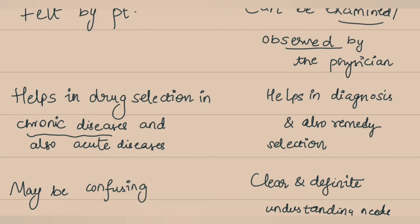These symptoms constitutionally help in understanding the patient's constitution and in determining the exact remedy, specifically in chronic diseases. Even in acute diseases to some extent — for example, if a patient describes a cough with a sensation of something stuck in the throat, that helps in remedy selection as well. If a woman complains of menstrual problems with a constant bearing-down sensation in the perineal area, the remedy follows from that. These are sensations felt by the patient that specifically help in remedy selection in chronic diseases.